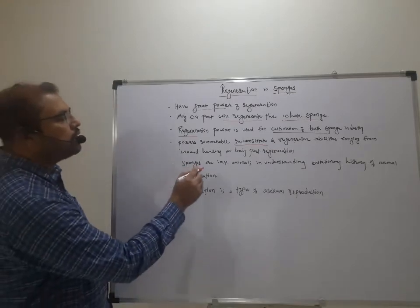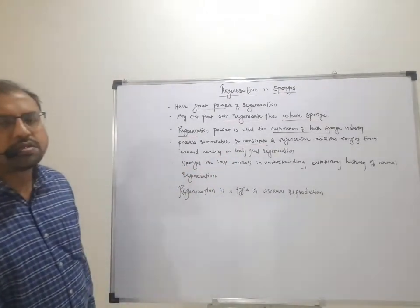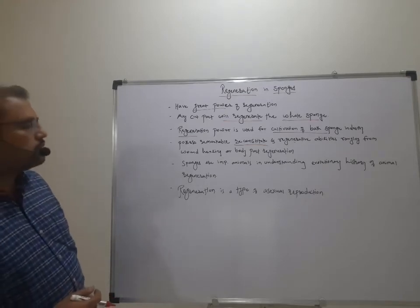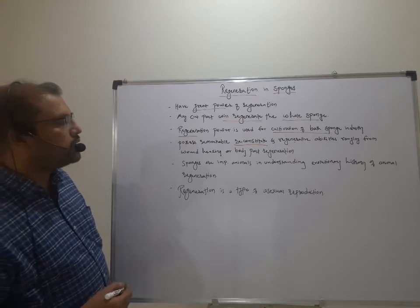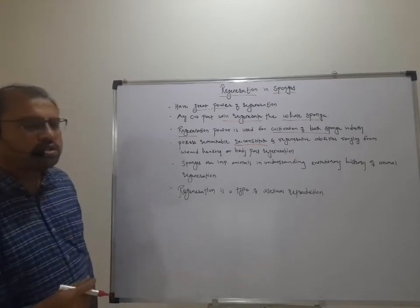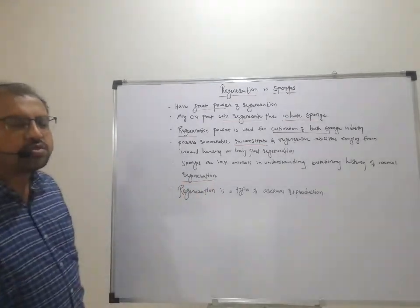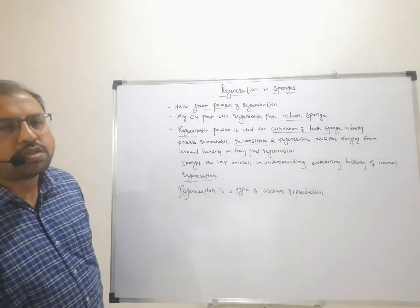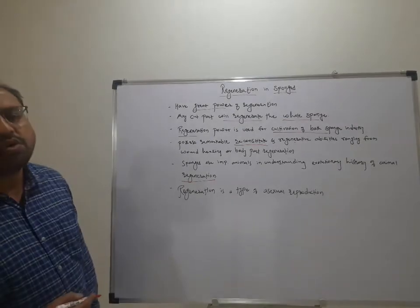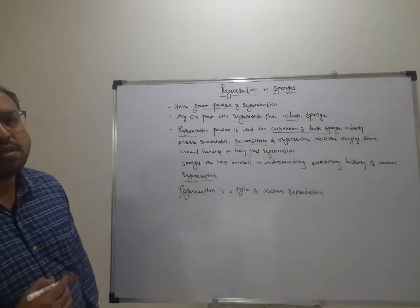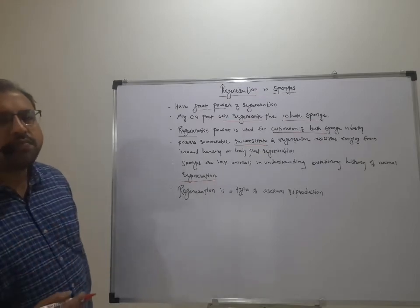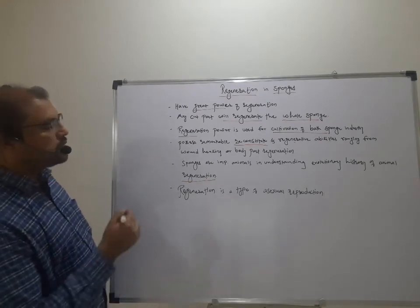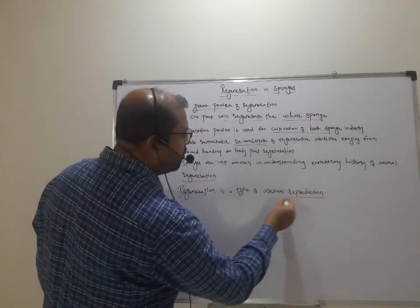These sponges possess remarkable reconstitutive and regenerative abilities ranging from wound healing to full body part regeneration. Sponges are important animals for understanding the evolutionary history of animal regeneration, as they are the first group of metazoans. Studying them helps us understand how regeneration evolved in living organisms.